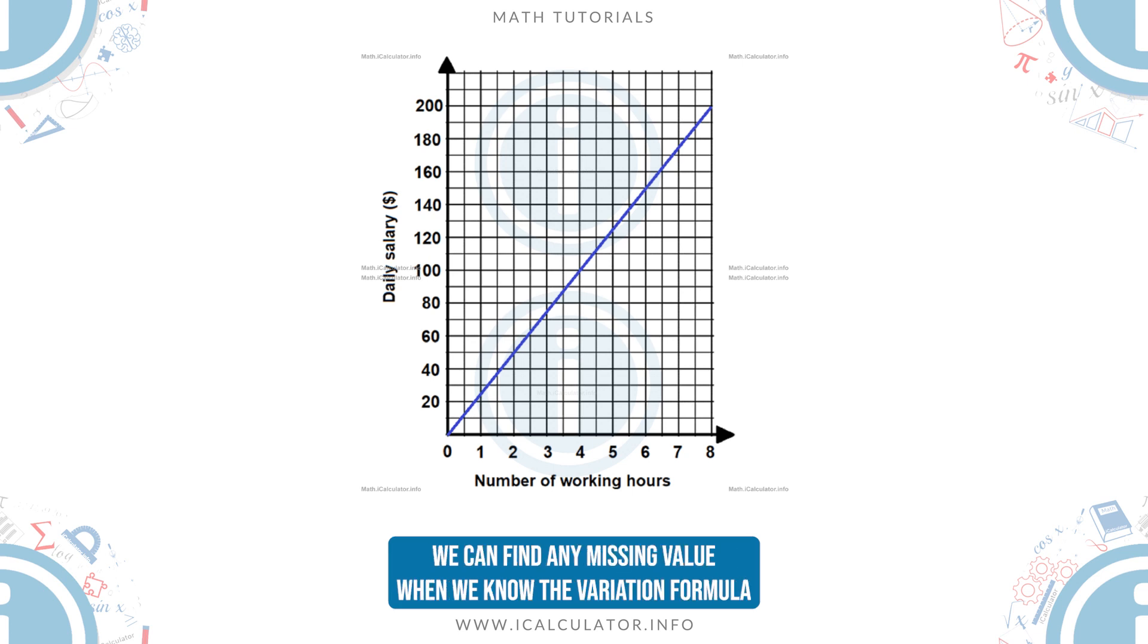We can find any missing value when we know the variation formula, as in the next example.